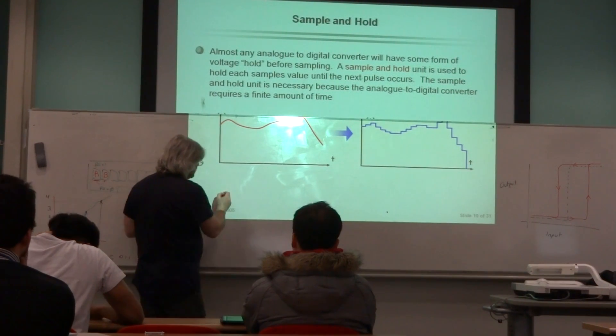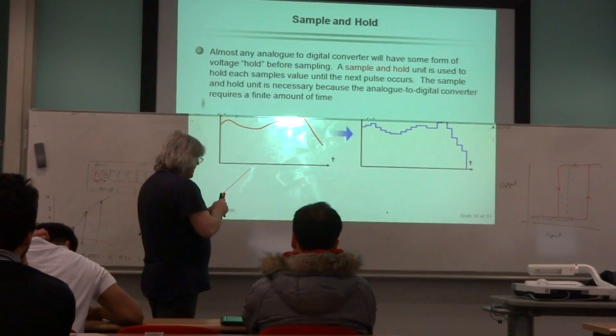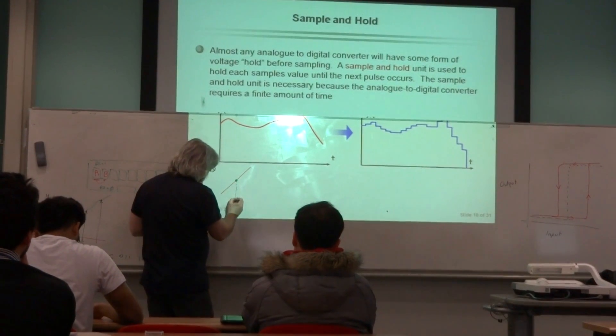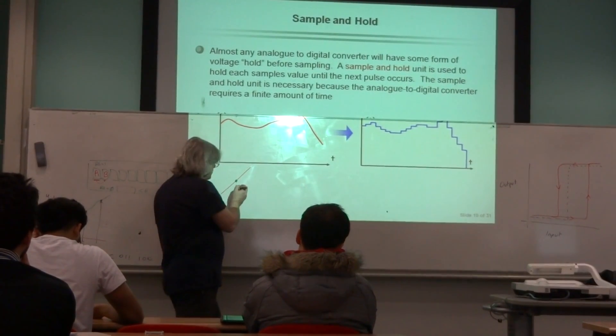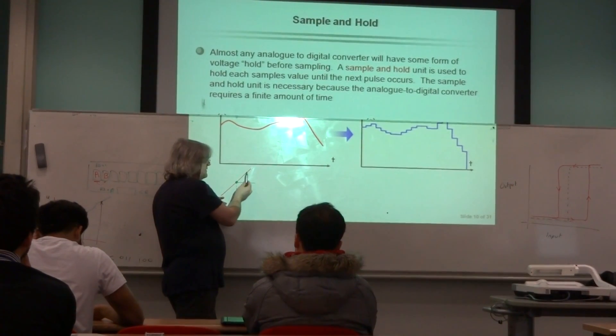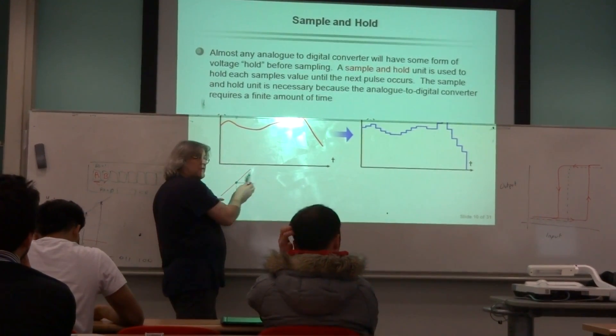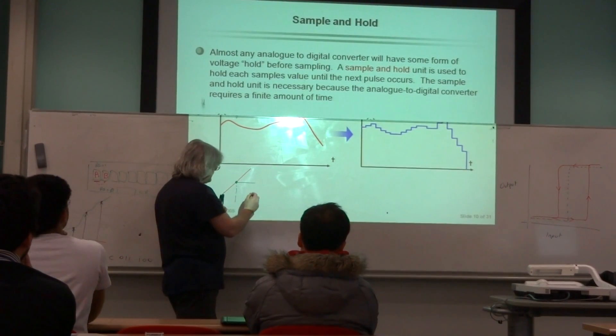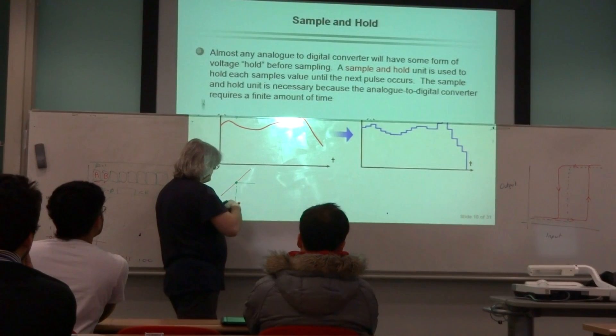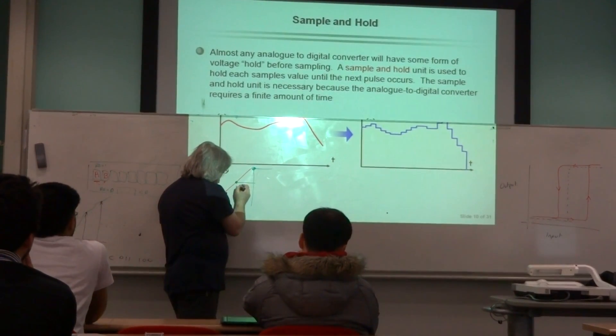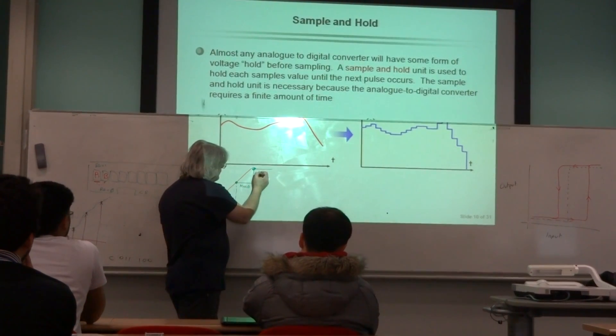If I had a real signal that was doing this kind of thing and I sampled at this point in time, then during the period that I'm actually doing the calculation of its magnitude I would be using that value even though the input signal is actually changing. We ignore that fact. The only time we take that into account is at the next sampling instance, up here, then we would hold that value so we're holding the value in order to perform the calculation.